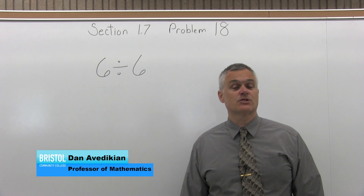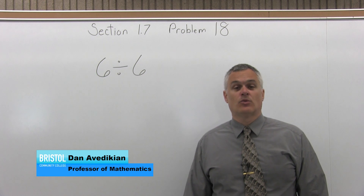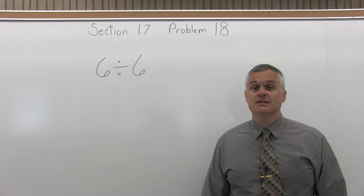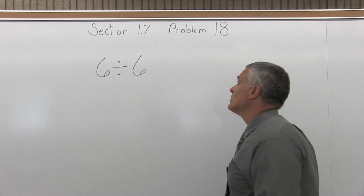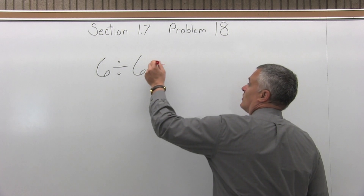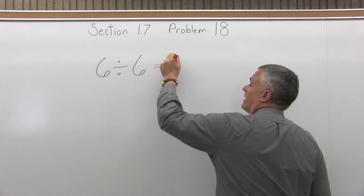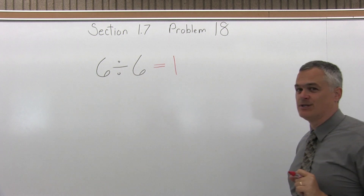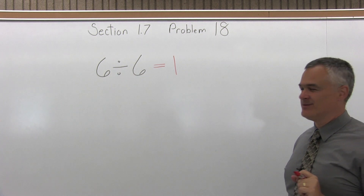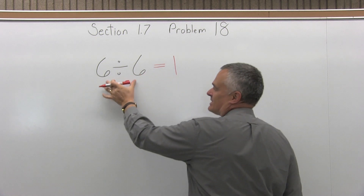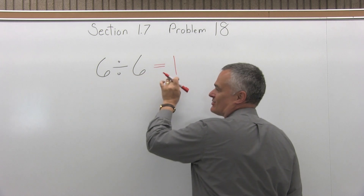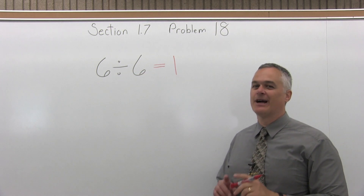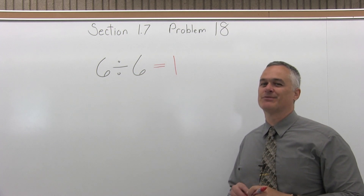This is Section 1.7, Problem number 18. The problem is 6 divided by 6. Well, the answer is 1. Whenever both numbers are the same, as long as they're not 0, the answer is 1. So if both numbers are, say, 78, the answer is 1. If both numbers are 0, then the answer is undefined. That's the one exceptional case.